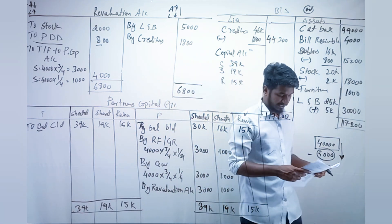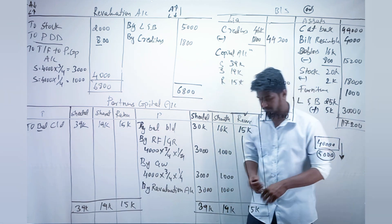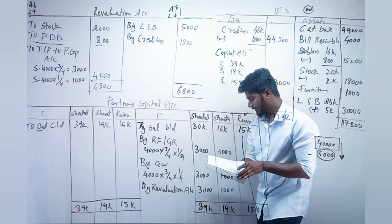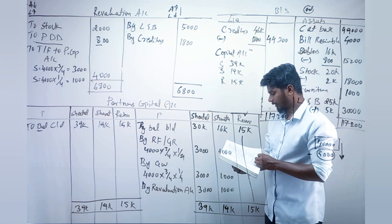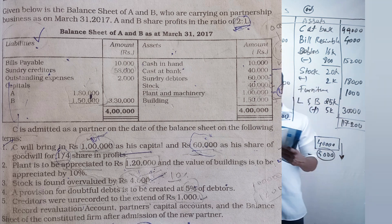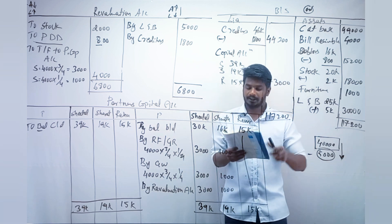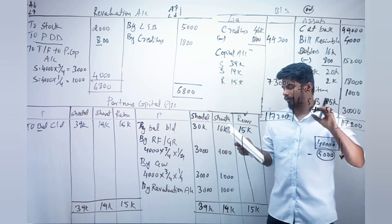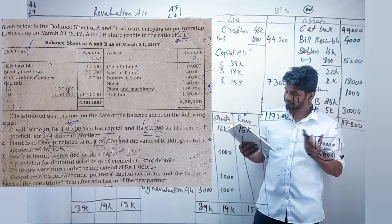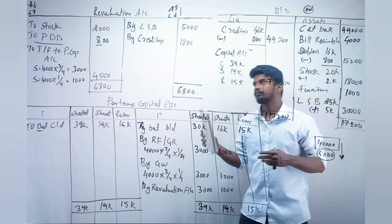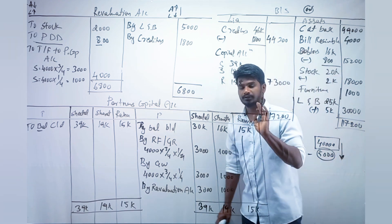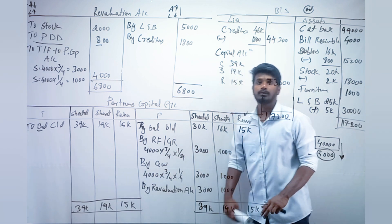Next is the textbook question — the third question. We will just discuss the adjustments. The first point is capital and goodwill: capital is recorded for the admitted partner and goodwill is shared to old partners in their old ratio — nothing goes in the revaluation account.